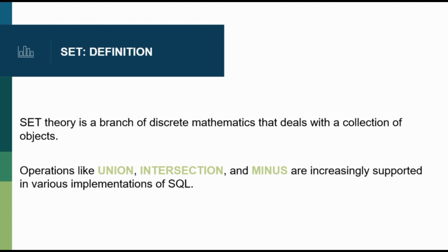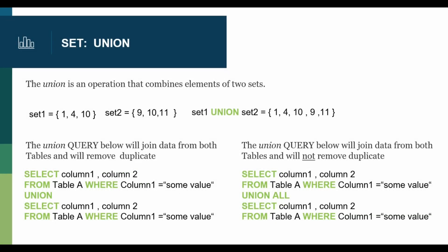If you look at the union operation, set1 has one, four, ten data elements and set2 has nine, ten, and eleven. If you do set1 union set2, we're gonna get all the data from set1 and set2 and there won't be any duplicates.